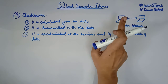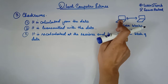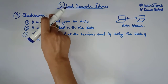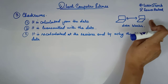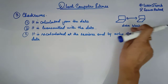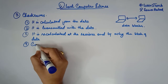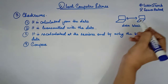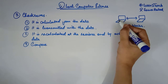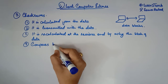Before transmission, the sender calculates the checksum and transmits that particular checksum value along with the data to the receiver's end. The receiver then calculates the checksum by itself using the data block, and finally compares both checksums — the one it calculated itself and the one that came from the sender.